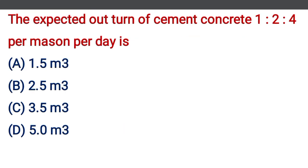The expected outturn of cement concrete 1:2:4 per mason per day is — option A: 1.5 m³, option B: 2.5 m³, option C: 3.5 m³, option D: 5 m³. The correct answer is option D, 5 m³.